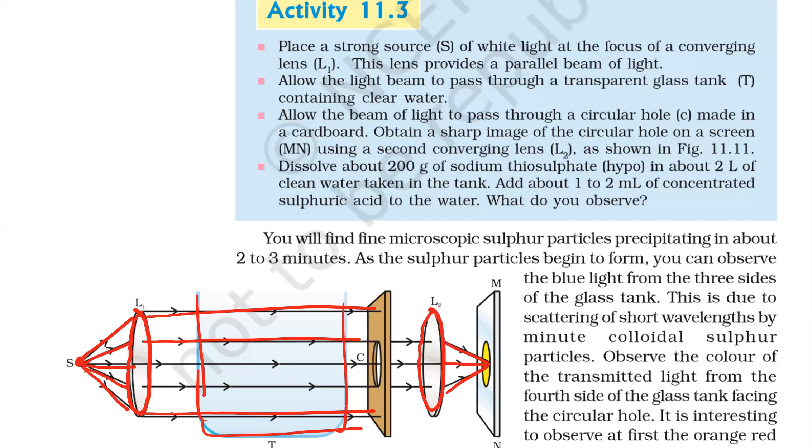There is a second converging lens, and the image is focused on screen. Dissolve about 200 grams of sodium thiosulphate in two liters of clean water taken in the tank. It's also called sodium hyposulphate. Add about 1 to 2 ml of concentrated sulfuric acid. What do you observe?